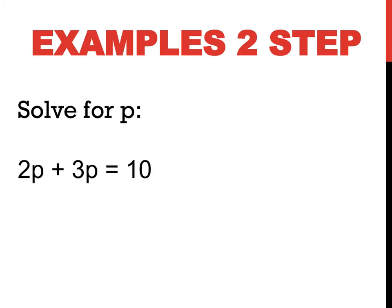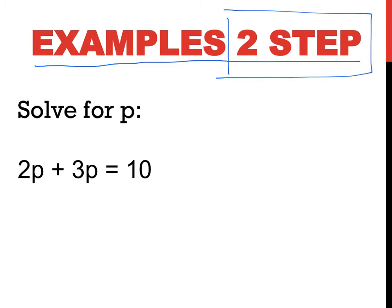The heading now says 'Examples: Two Steps', so make sure you've got a different heading. It says solve for p. What do you notice is different about this equation? This time I have two p's — a 2p and a 3p. In algebra we learn about like terms: if they have the same pronumeral, they're a like term and I can group them. So if I ever see an equation with like-term pronumerals on one side, I must group them.